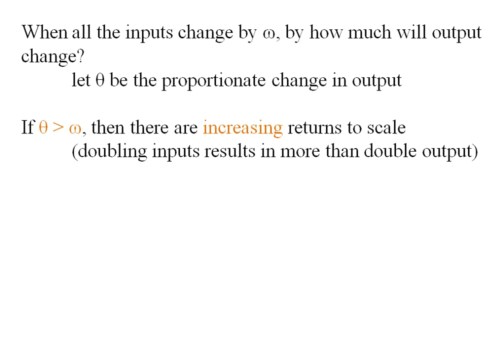So if theta exceeds omega, then we say there are increasing returns to scale. So for example, if you doubled your inputs, you'd get more than double output.